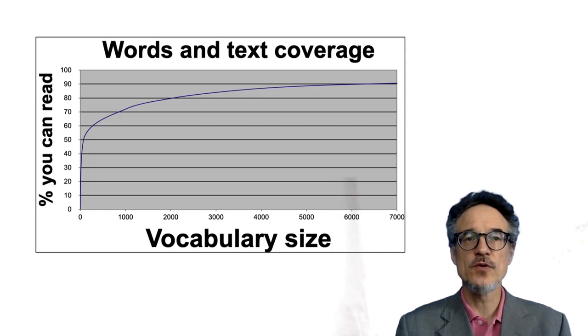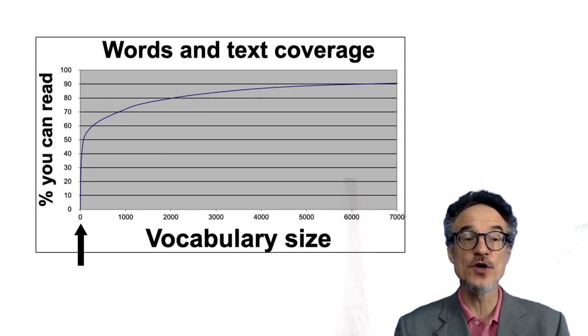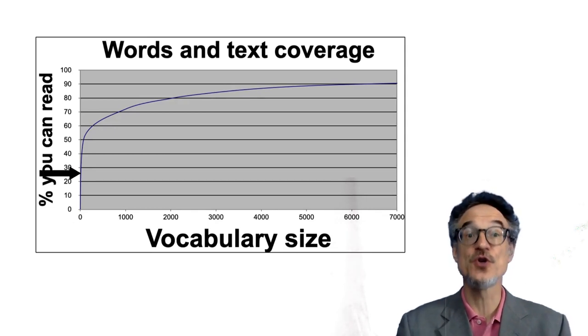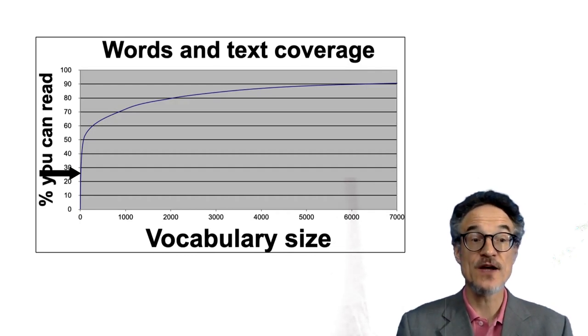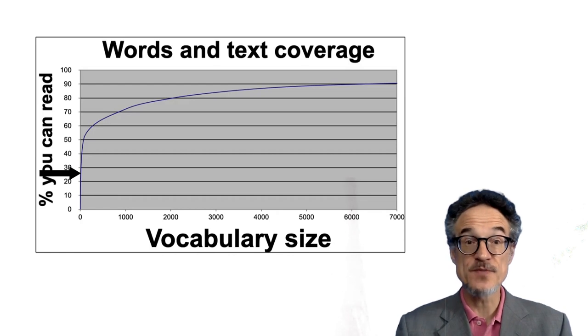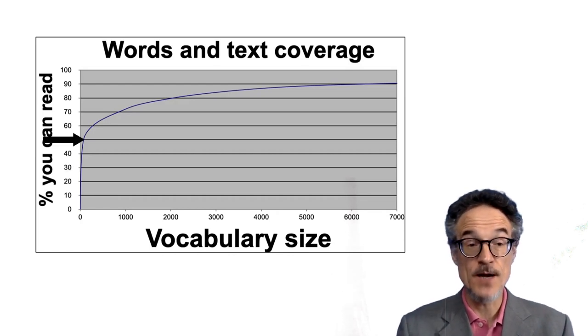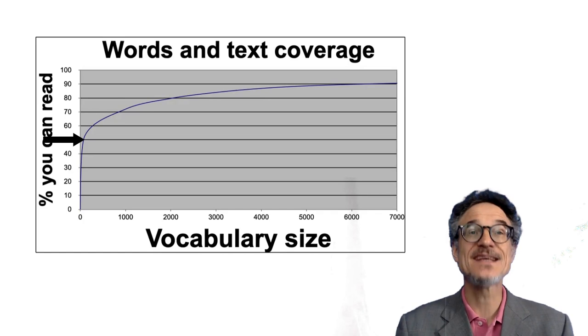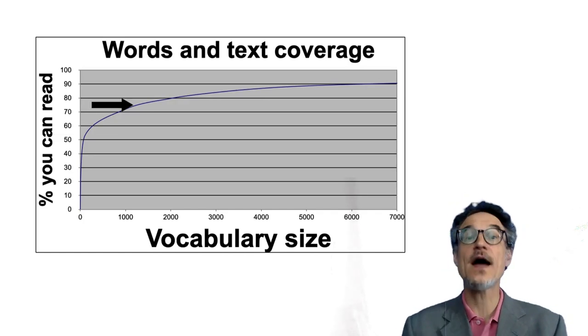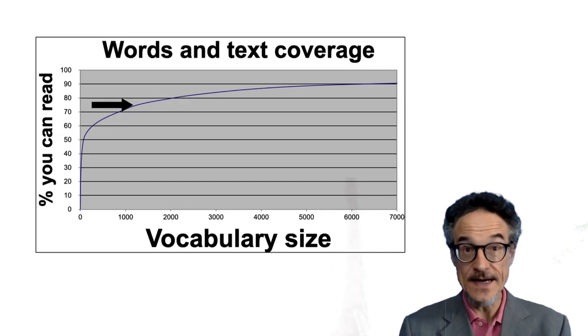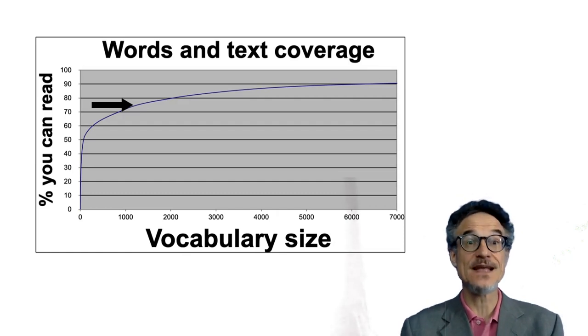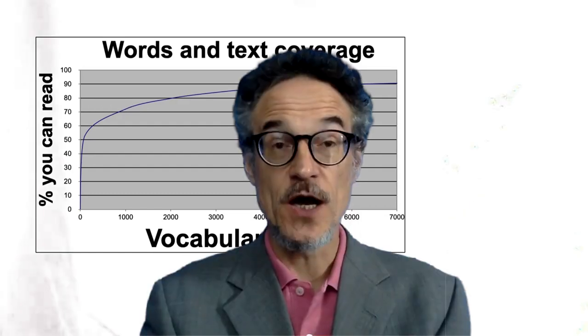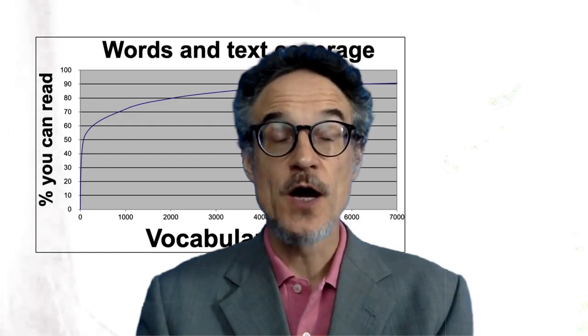So if we go along from left to right, this is how many words you know. A thousand words, two thousand words, three thousand words. As we saw, if you know ten words, and if you go up, this is how much you can read. So if you know ten words, you've got about twenty-five percent. A hundred words, you're up to fifty percent. And a thousand words is up to something like seventy-five percent. So if you know a thousand words in English, then you can read seventy-five percent of everything that's been written in English. This is very, very good news.